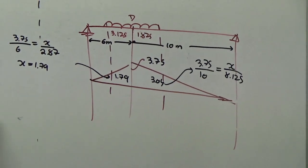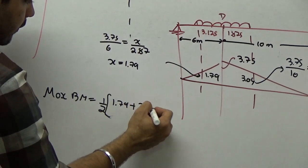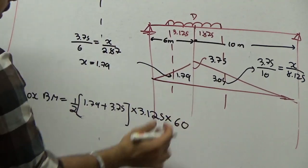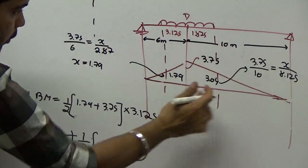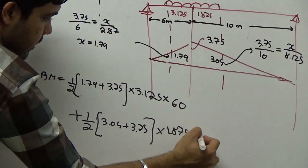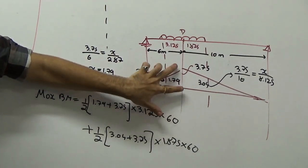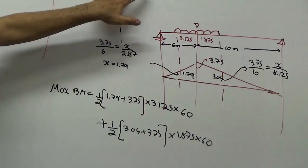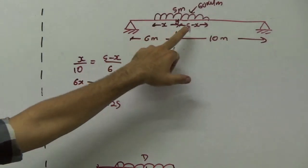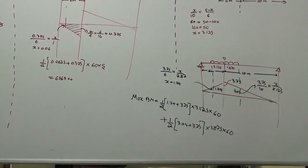The maximum bending moment is calculated in two parts: (1/2)(1.79 + 3.75) × 3.125 × 60 plus (1/2)(3.04 + 3.75) × 1.875 × 60. This approach takes the average ordinate on each side of D, multiplied by the respective UDL length and intensity. This is how rolling UDL problems are solved using ILD.